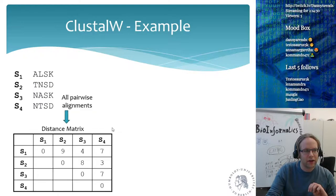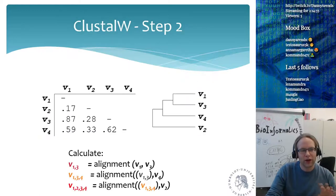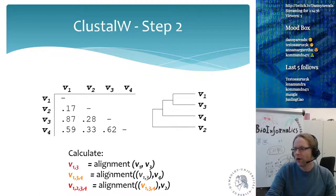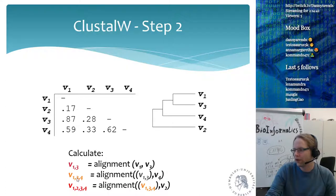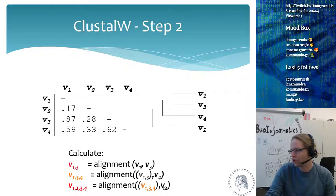Then the consensus sequence is aligned against all of the other ones in the matrix, so the matrix becomes smaller. The consensus sequence is aligned against V4, creating a new sequence built from sequences one, three, and four. Then you align this new sequence against V2, the last and most distant sequence, and you get your alignment.